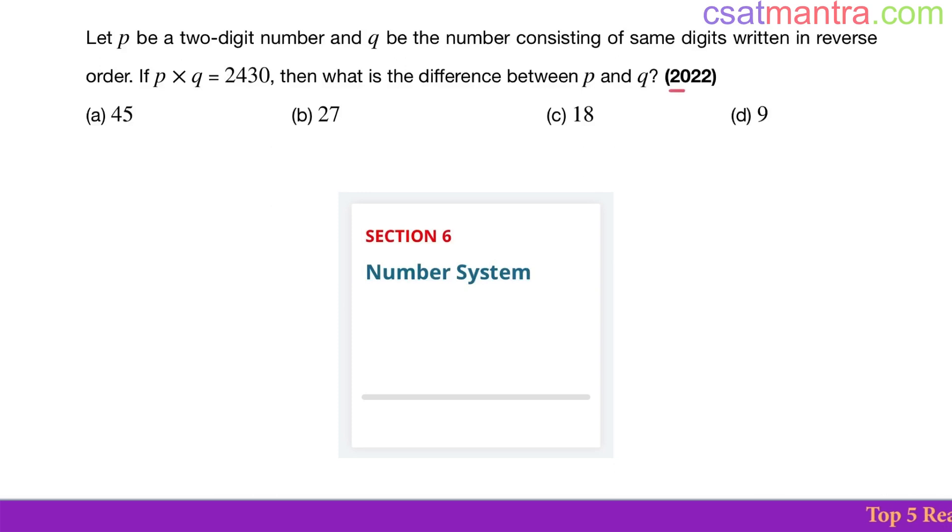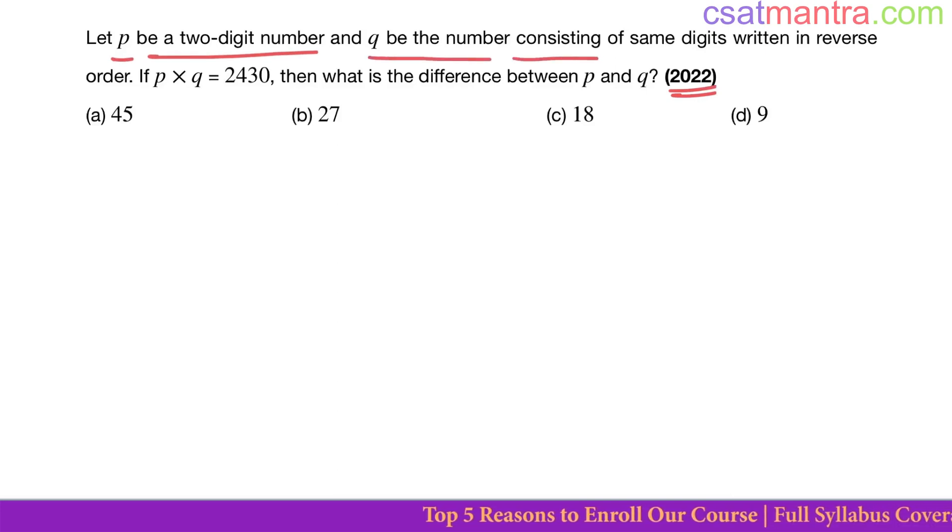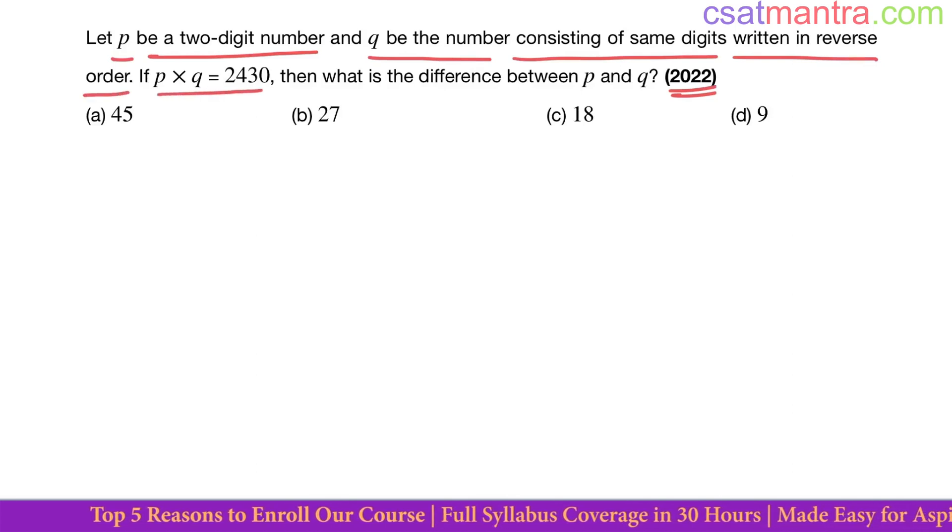This question is asked in 2022 based on number system. Let p be a two-digit number and q be the number consisting of same digits written in reverse order. If p times q is equal to 2430, then what is the difference between p and q?